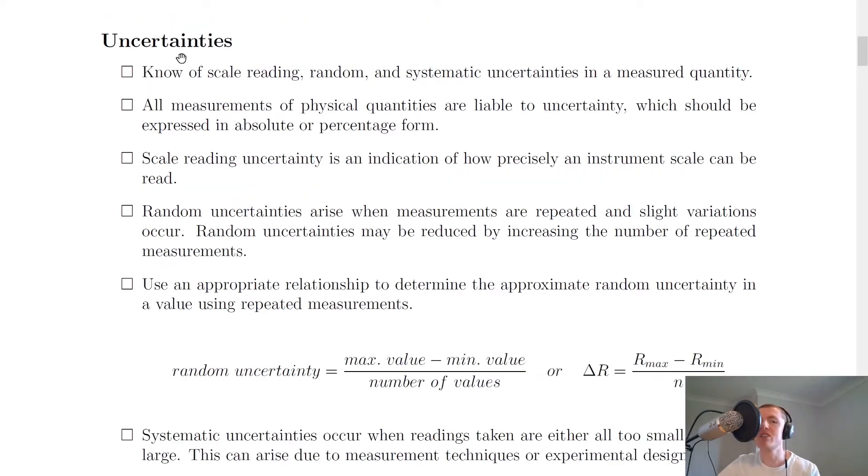Next, looking at uncertainties, you need to know of scale reading, random and systematic uncertainties in a measured quantity. So you need to know how to define all of those. You also should know that all measurements of physical quantities are liable to uncertainty, which should be expressed in absolute or percentage form. So when we're writing down final uncertainties, we should be writing them down in absolute form or percentage form.